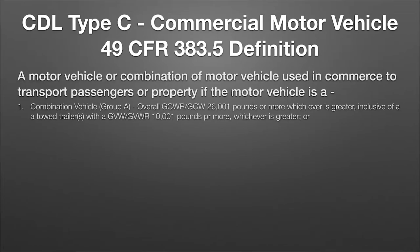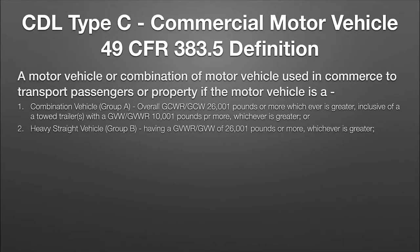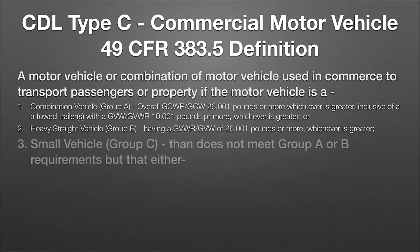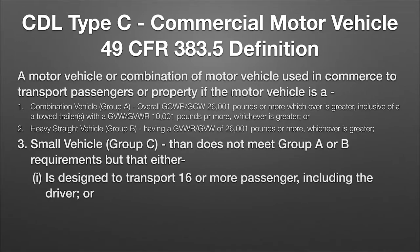The first and second points we already covered in our Group A and Group B vehicles, so I'm not going to get into those. The third point talks about Group C vehicles — basically small vehicles that do not meet Group A or Group B requirements. Number one, Roman numeral I: designed to transport 16 or more passengers, including the driver. I want you to remember those words — 'designed to transport' — we'll come back to address that.